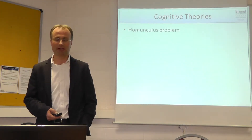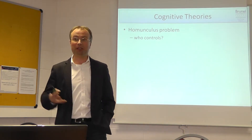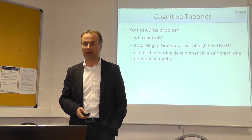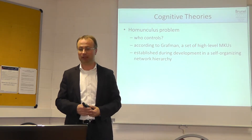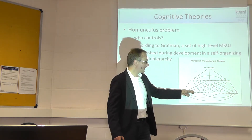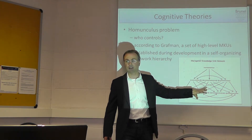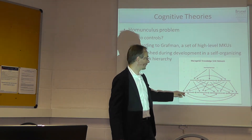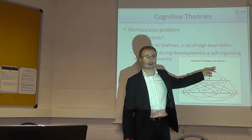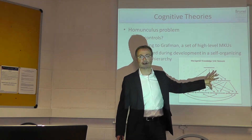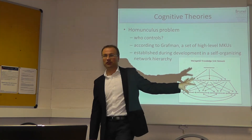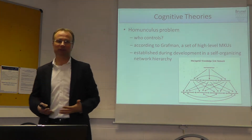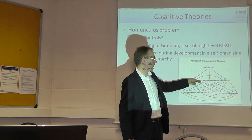They're created. The homunculus problem — that is, who is in control of everything — is answered by saying it's just a set of high-level MKUs developed during childhood. He thinks it is like neural networks, with different exact topographies and model types conceivable. Basically it's hierarchical and interconnected, with activations and inhibitions. Such a network can be self-organized, so that higher-level units arise as a feature of lower-level units.